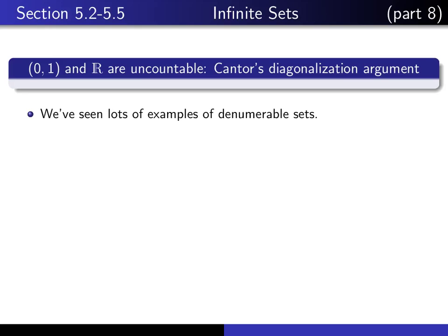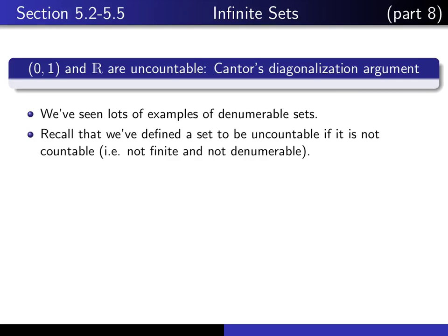I'm going to do it by using a very famous argument in mathematics known as Cantor's Diagonalization Argument. So far we've seen lots of examples of denumerable sets, but we haven't seen any examples of uncountable sets. Recall that a set is defined to be uncountable if it is not finite and it is not denumerable.